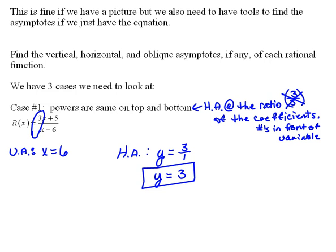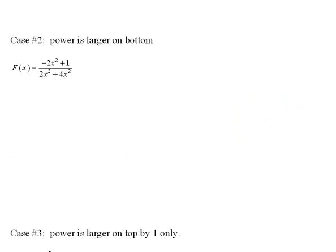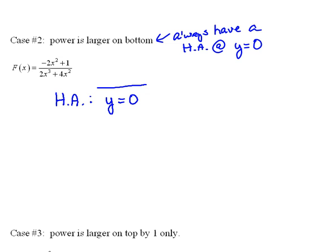Now, what happens if - and we're not going to do the vertical asymptote on this one, we'll just focus on horizontal and oblique. What happens if the power is larger on bottom? In this case, our highest power on top is 2, and on bottom is 3. When this happens, we always have a horizontal asymptote at y equals 0.